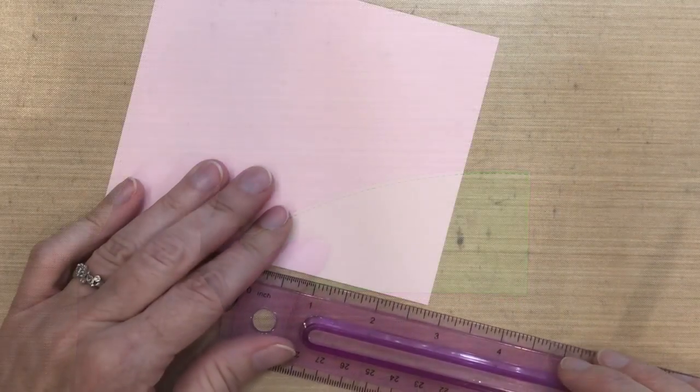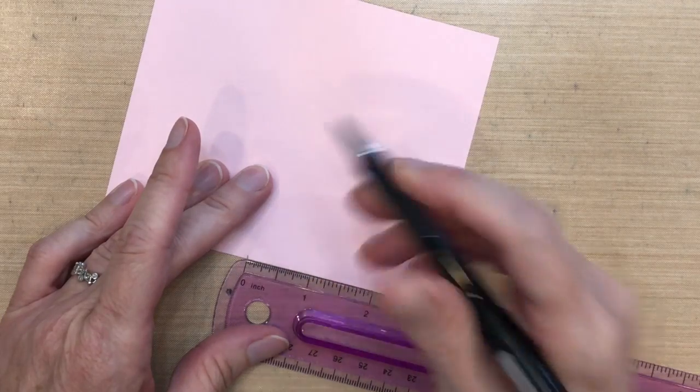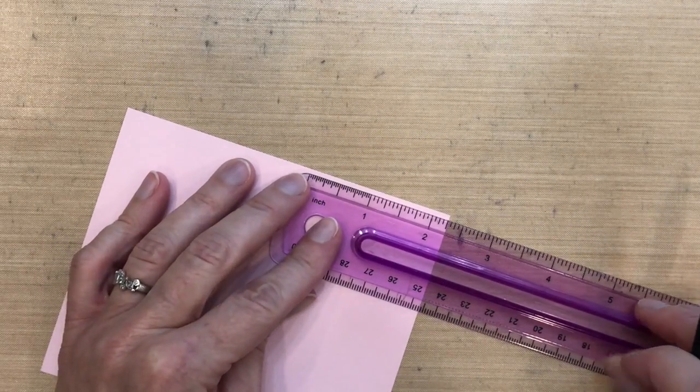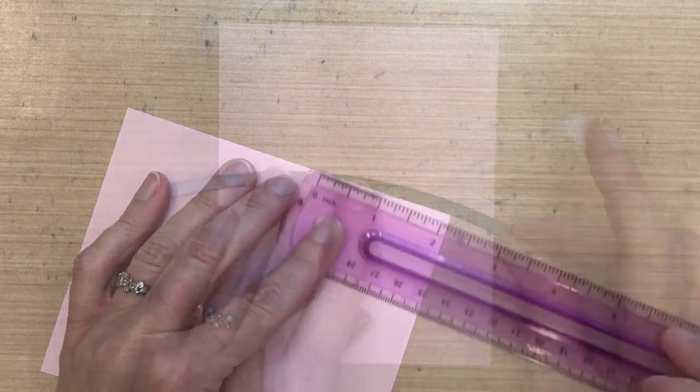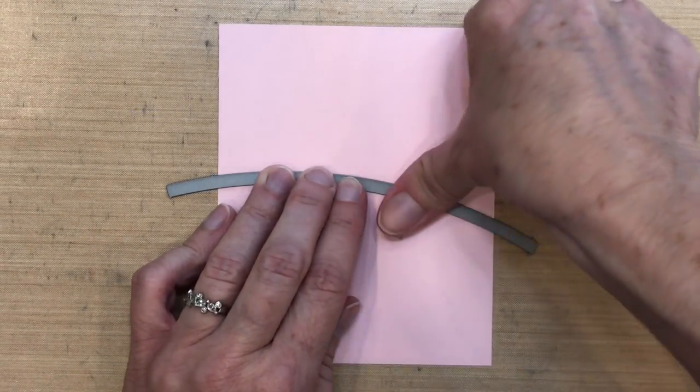And then for my Pink Pirouette, I'm going to measure this at two and seven-eighths, and then at the top here I'm going to measure it at two and a quarter. So that one's going to be less because it's going to go downhill. So I'm going to set that up for my Big Shot.